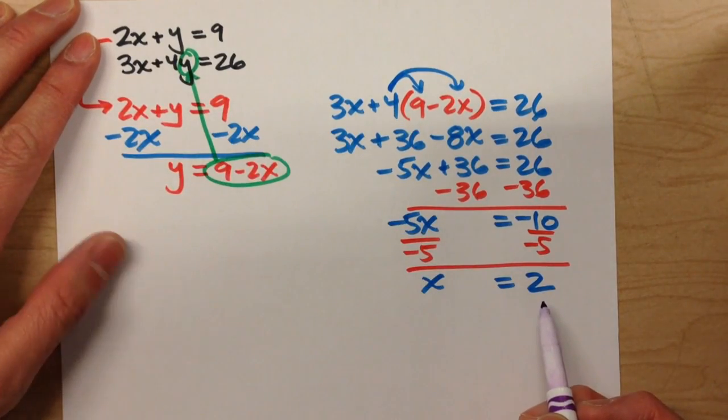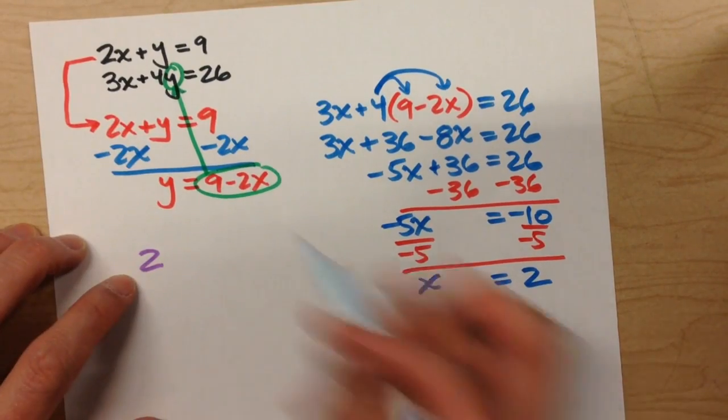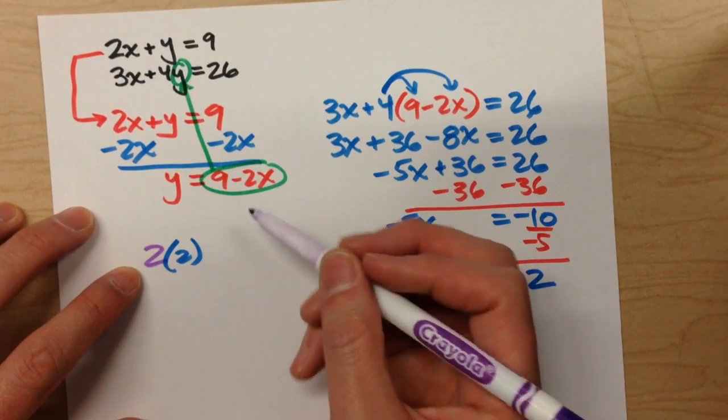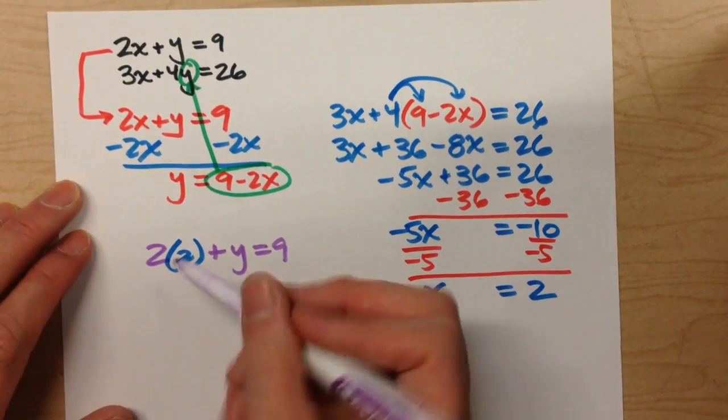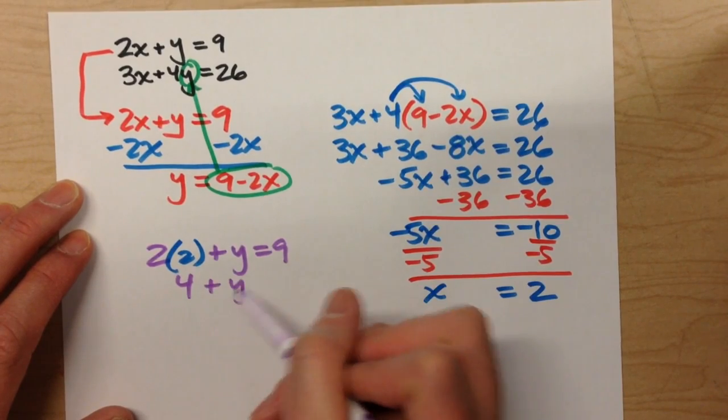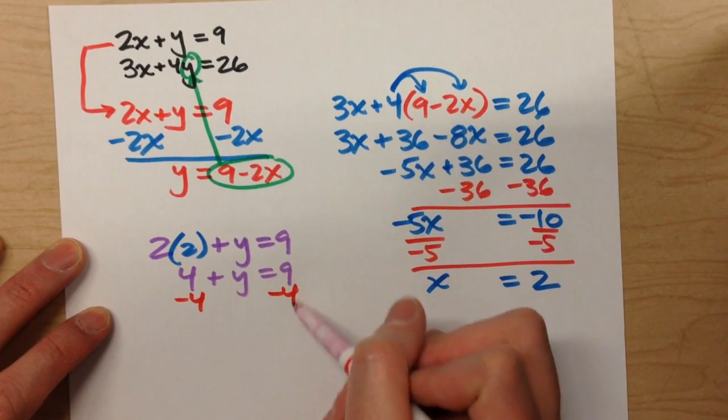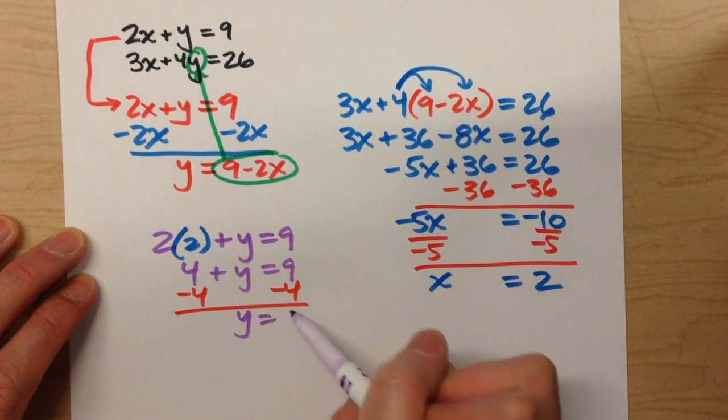So I'm going to have 2, and instead of x, 2, so 2 times 2, plus y equals 9, which is 4 plus y equals 9. If I minus 4 on both sides, I end up getting y equals 5.